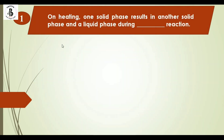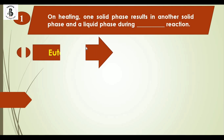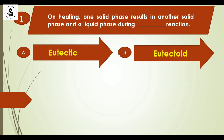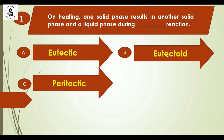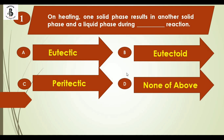Question 1: On heating, one solid phase results in another solid phase and a liquid phase during which reaction? Option A: eutectic, Option B: eutectoid, Option C: peritectic, and Option D: none of the above.